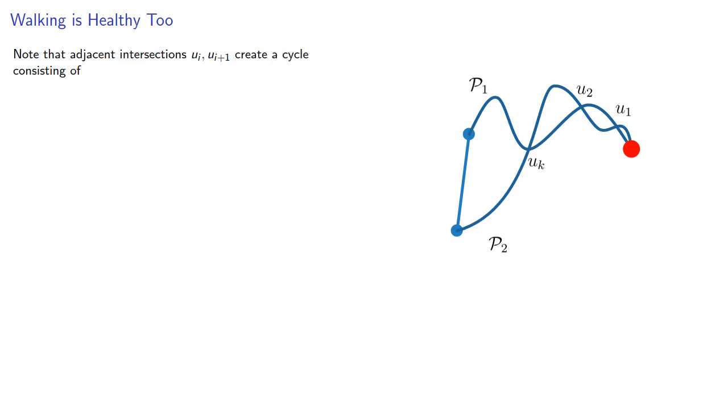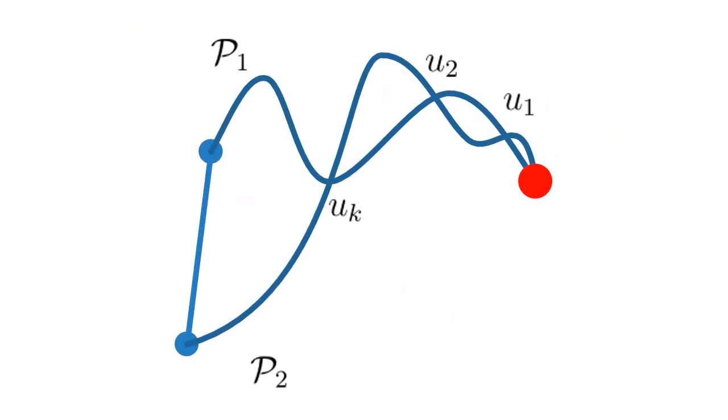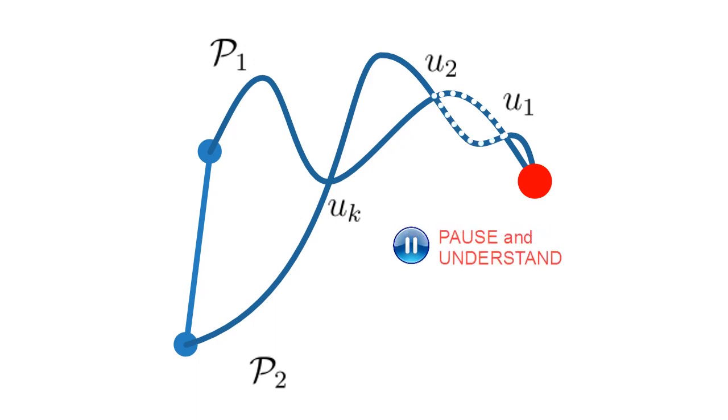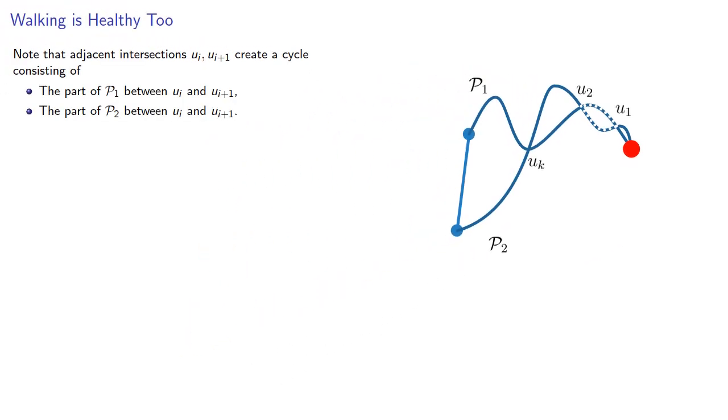Note these adjacent intersections create a cycle that consists of the part of P1 between the two vertices and the part of P2 between the two vertices. By assumption, all cycles are even, so the lengths of these paths are either both even or both odd.